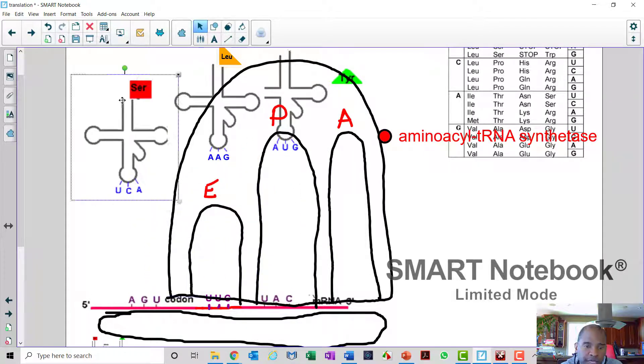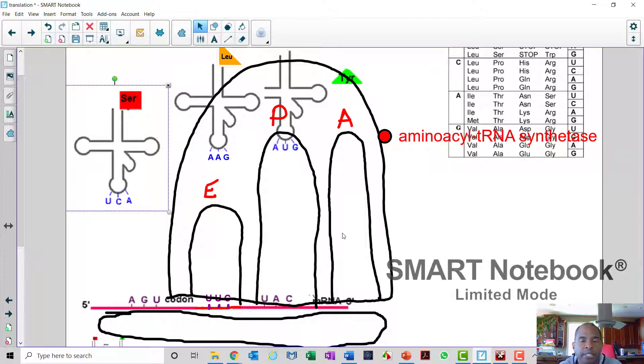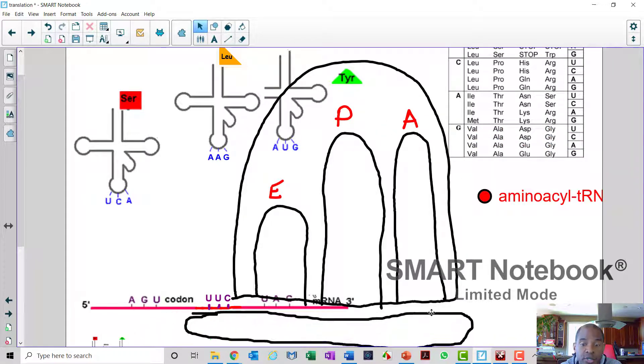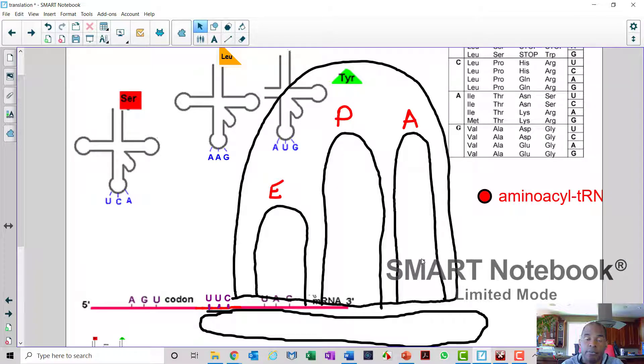And there's another site here called the E-site, which is an exit site, which basically ejects the tRNA, leaving the amino acid behind. Okay? So that is the ribosome. The ribosome is made up of rRNA. So the rRNA constructs this very complex ribosome, which is going to be a major player in the protein translation event.